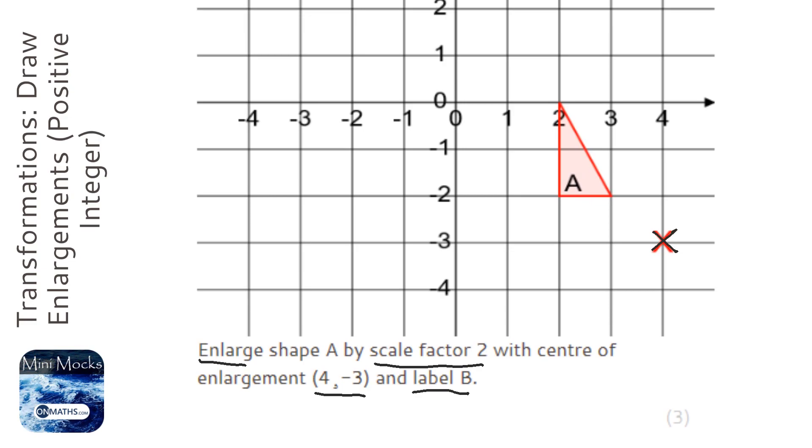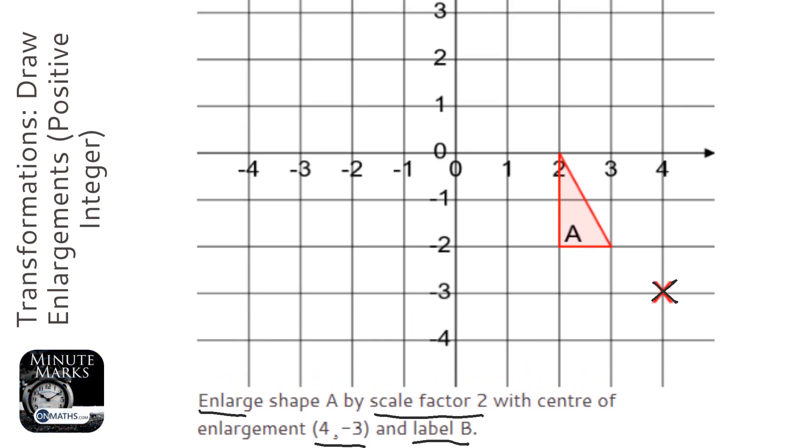So that might be the first thing you do - just put a little cross where the center of enlargement is. And to do this, there are two ways of doing this. There's a way where you draw the ray lines on.